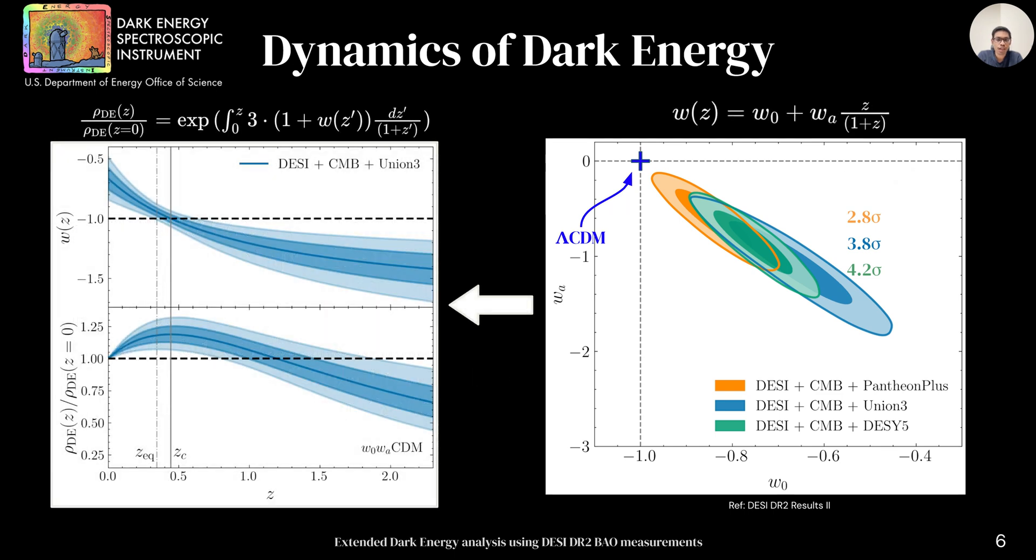To better understand this constraint, we can convert these contours to redshift evolution as shown on the left figure. On the top we have w-1 at lower redshift. This evolution is also reflected in dark energy density as a bump shown in the bottom plot. The peak of the density is marked with solid gray line where w crosses minus 1 and dashed gray line shows matter dark energy equality.